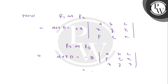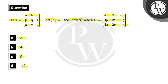So determinant of B is minus 8 times the determinant of A, which equals minus 8 times 2, giving us minus 16. So the answer goes to option number D. Hope you can identify the best of it — thank you.